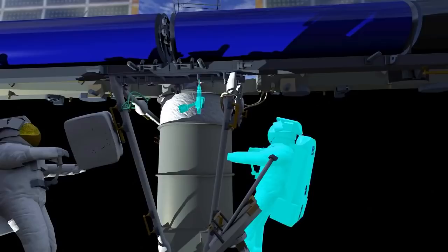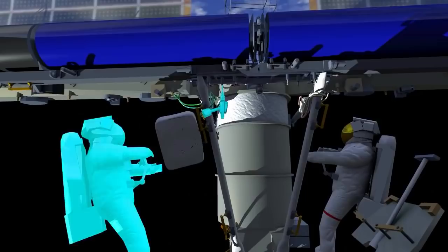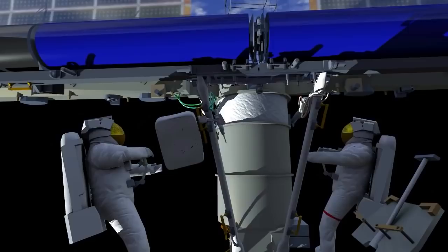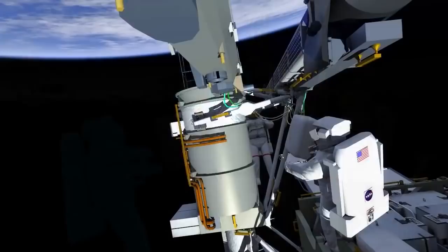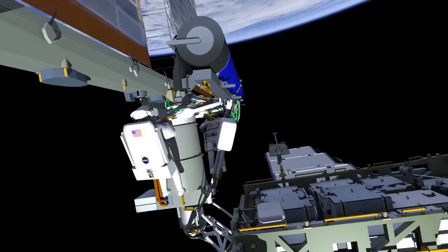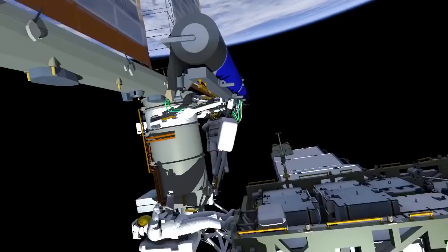Once that's in place, there are eight mounting bolts that hold all of the IROSA solar array onto the mounting bracket. Thomas will drive the first four, followed by Shane driving the second set of four. Shane and Thomas will work together to install the electrical cables that hook up to IROSA. One set goes to the right side, and the other set goes to the left side, and they are finally hooked up in place on the legacy solar arrays.